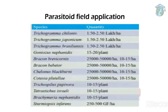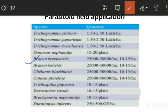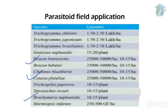Next, the dosage for applying parasitoids in the field to control pests: Trichogramma chilonis — 1.5 to 2 lakh per hectare; Trichogramma japonicum — 1.5 to 2 lakh per hectare; Bracon brevicornis — 25,000 to 50,000 per hectare or 10 to 15 per plant; Chelonus blackburni — 25,000 to 50,000 per hectare; Brachymeria nephantidis — 10 to 15 per plant.